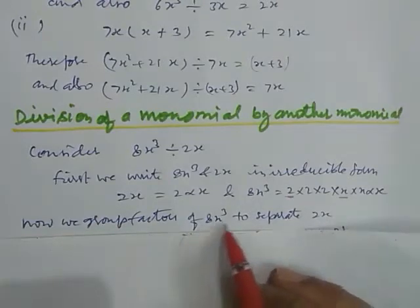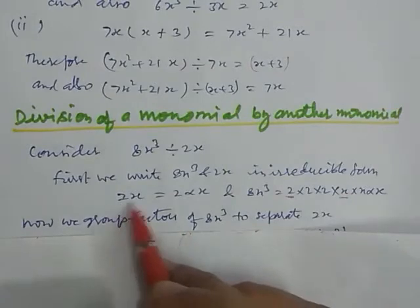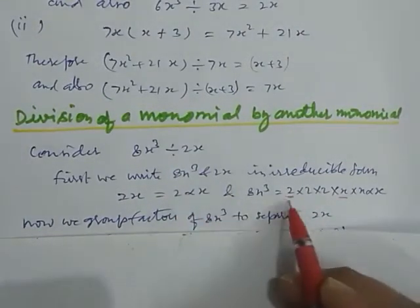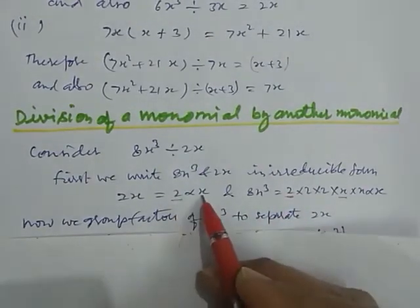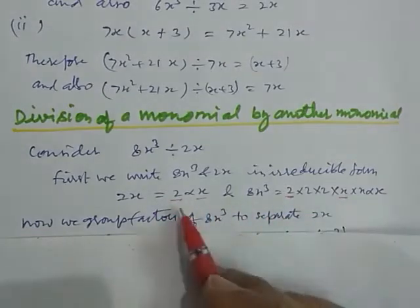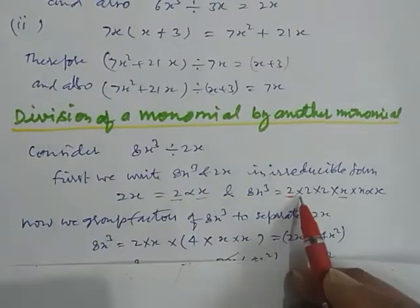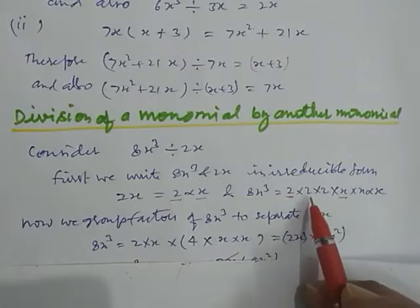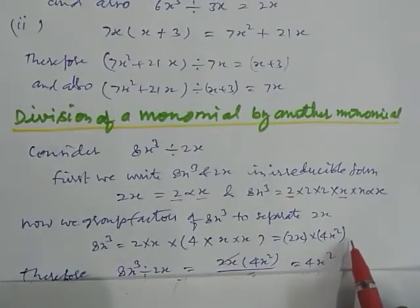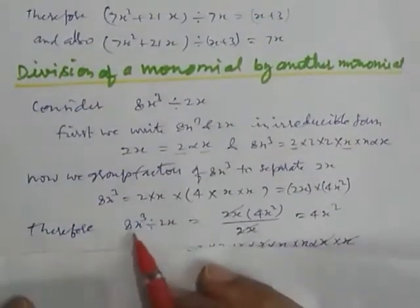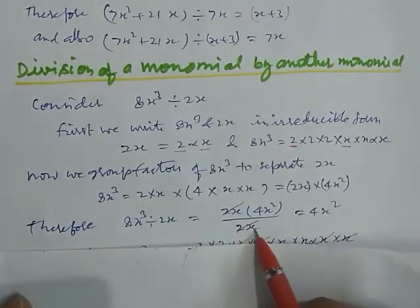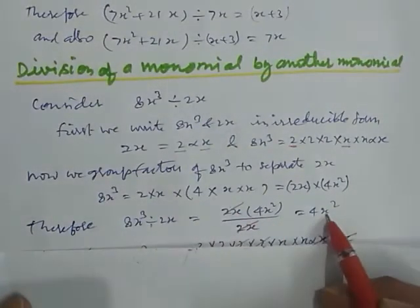We group the factors of 8x cube and 2x. Which part is common in both? 2 and x are common. So we take 2x common from both parts. By taking 2x as common, what is left? 2 into 2 is 4, and x into x is x square. That is, 2x into 4x square. Therefore, when we divide 8x cube by 2x, this 2x cancels out and 4x square is left — this is our answer.